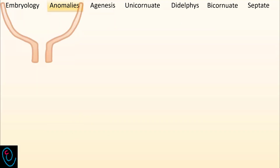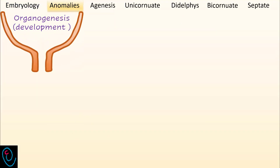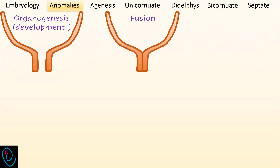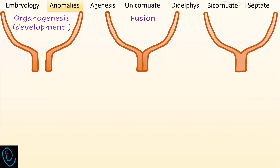In conclusion, Müllerian structures form through three steps: organogenesis, which is the development of Müllerian ducts; followed by fusion of the caudal part of the ducts; followed by resorption of the septum in between the ducts to form a single cavity.